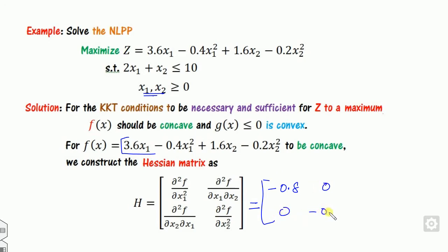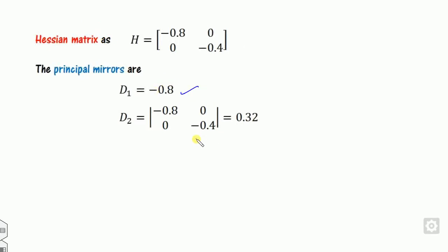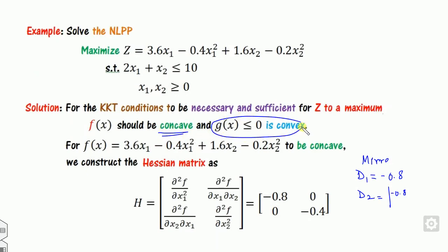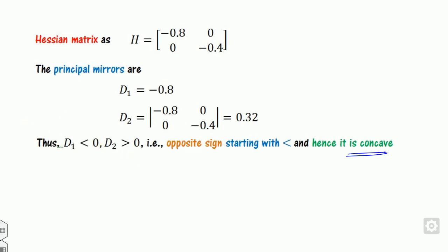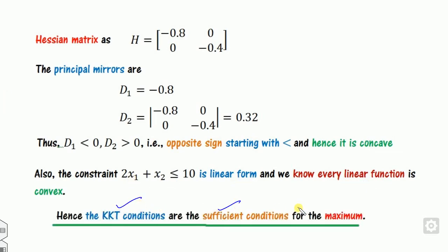The partial second derivative with respect to x1 twice is −0.8, the cross terms are 0, and the second derivative with respect to x2 twice is −4. The first principal minor is less than zero; the second principal minor — the determinant — is greater than zero. They are of alternating sign with the first one negative, so the function is concave and will give the maximum value. Since the constraint is linear, it is convex, so the KKT conditions are sufficient for this maximization problem.